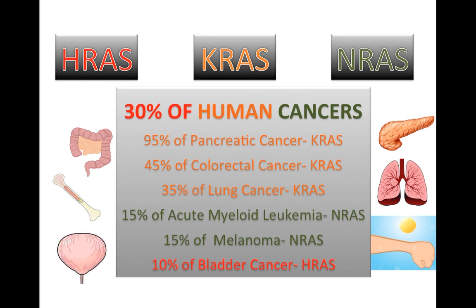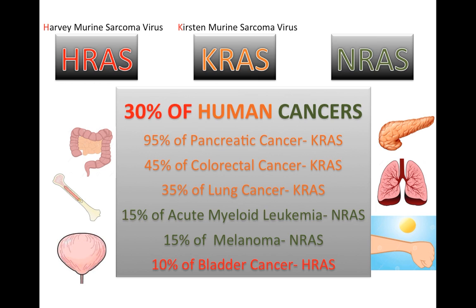The first two RAS genes, HRAS and KRAS, were identified respectively in Harvey and Kirsten murine sarcoma viruses in the 1960s in rats. In the 1980s, RAS genes were first found in human tumors, and the third human RAS gene, NRAS, was subsequently discovered in human neuroblastoma cells.